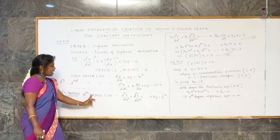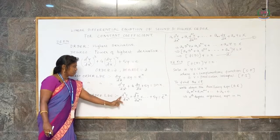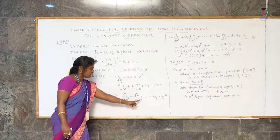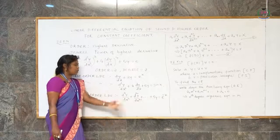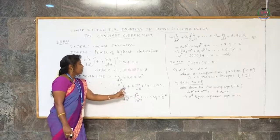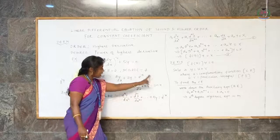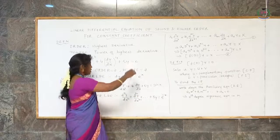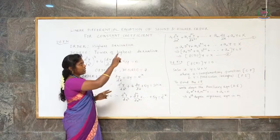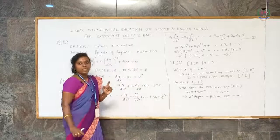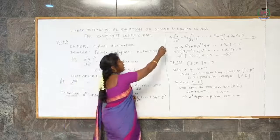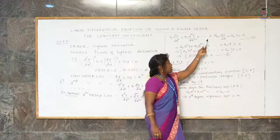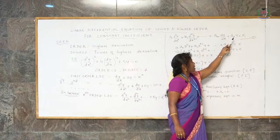Similarly, we can write the nth order linear differential equation as: d^n y/dx^n plus d^(n-1)y/dx^(n-1) plus etc., plus 5y equals e^(-x). Here 4 and 5 are constants and the right-hand side terms such as sin x, e^(-x), and e^x are termed functions. Generalizing, the constants are named a₀, a₁, a₂, ..., aₙ and the function is named capital X. So the general form is: a₀ d^n y/dx^n plus a₁ d^(n-1)y/dx^(n-1) plus ... plus a_(n-1) dy/dx plus aₙy equals X.